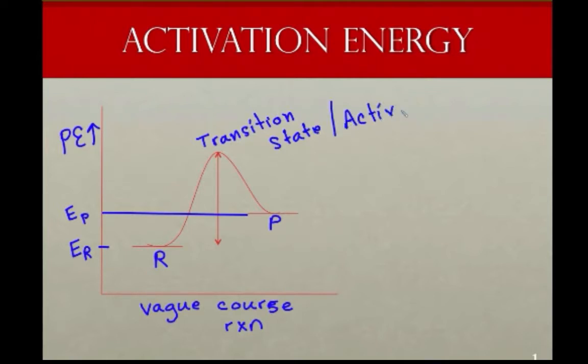Now on this, we have something up here called a transition state or an activated complex. And that is a point at which the bonds that are going to break are partially broken. The bonds that are going to form are partially formed. And it's committed to going to product. That's key. It's committed. So both of these are partial. Remember that partial positive, partial negative. I'll use that symbol there for us. It's committed to heading on to the product.